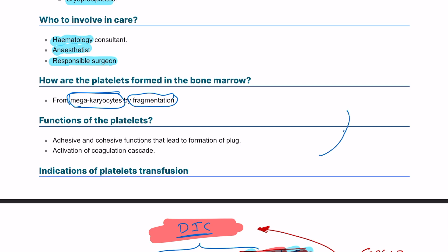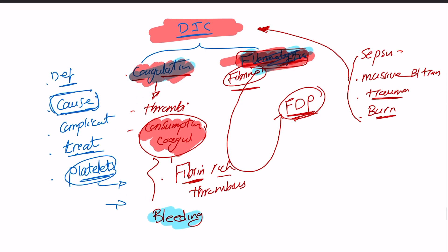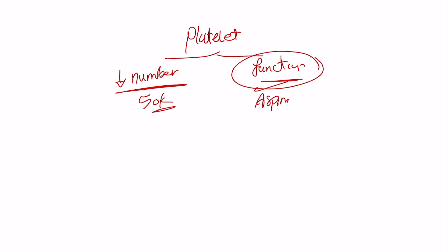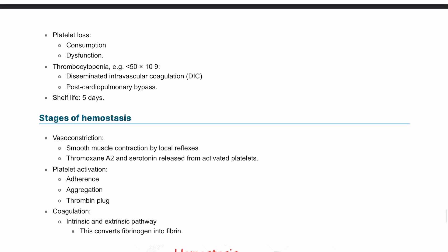Platelets have important functions of adhesion to the endothelium, adhesive and cohesive function, and most importantly activation of the coagulation cascade leading to formation of a thrombus. The indication of platelet transfusion: platelets might be decreased in number (thrombocytopenia) or the function is affected. We need to transfuse if they have decreased number, maybe less than 50k, or decreased function, maybe they've been on aspirin for a very long time. Thrombocytopenia can occur in DIC or post-cardiopulmonary bypass.